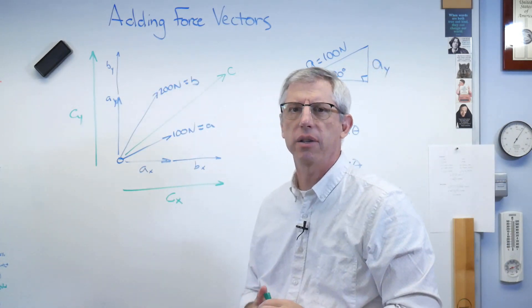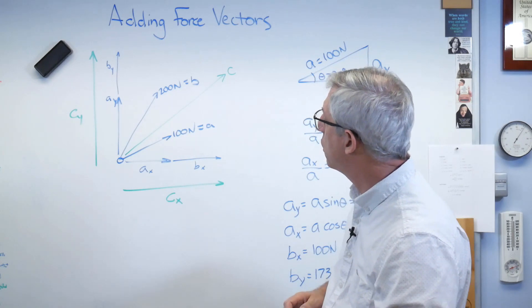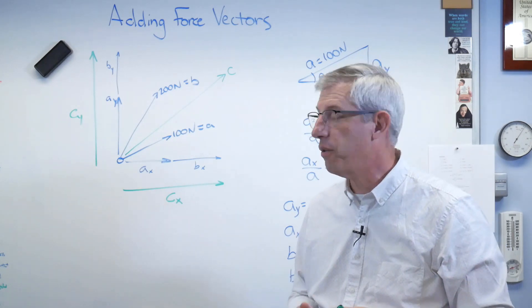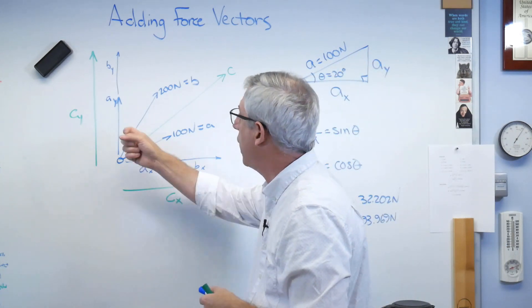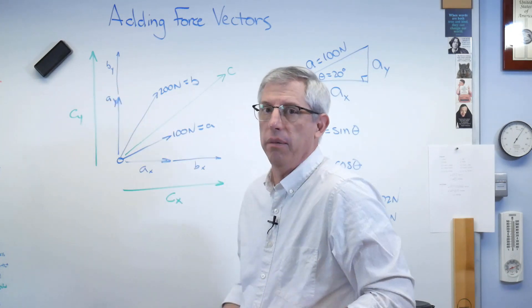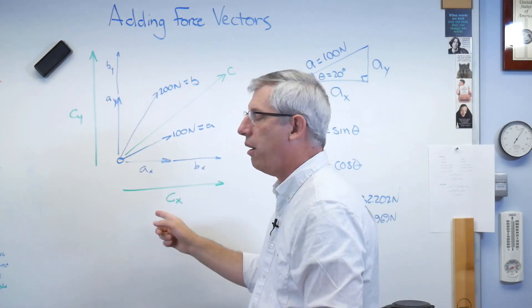But here's the thing. I mostly don't need Cx or Cy. In order to sum my forces in the x and y direction, I need Ax, Bx, Ay, and By. Well, I've got them. I don't need to go to here if I don't want to.